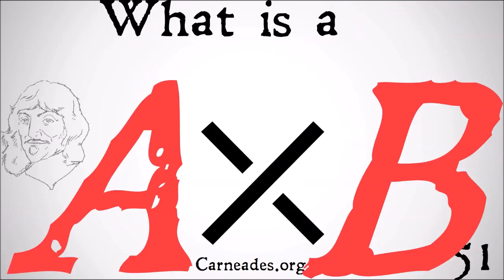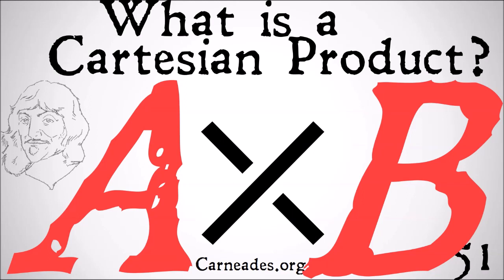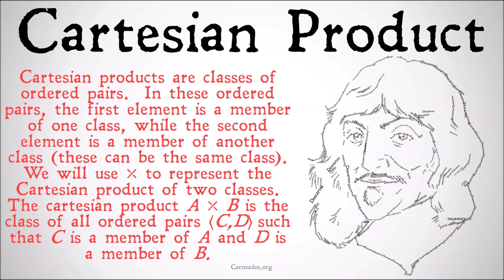So in this video we're taking a look at what is a Cartesian product. Cartesian products are classes of ordered pairs, a specific kind of class of ordered pairs. In these ordered pairs, the first element is a member of one class while the second element is a member of another class, though these can be the same class. They can even be the same elements.